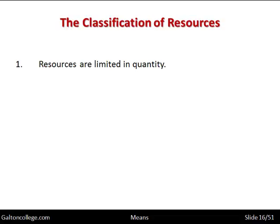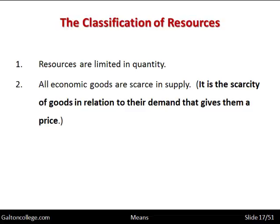Unfortunately, some items can't be priced because they are what we call free goods — that's why we abuse them. We abuse the planet; that's why the polar ice caps are melting and we pollute the air. All economic goods are scarce in supply. It is the scarcity of goods in relation to their demand that gives them a price — scarcity determines the price of economic goods. Economic goods are goods that are scarce in supply relative to want, and that's where the pricing system comes from.